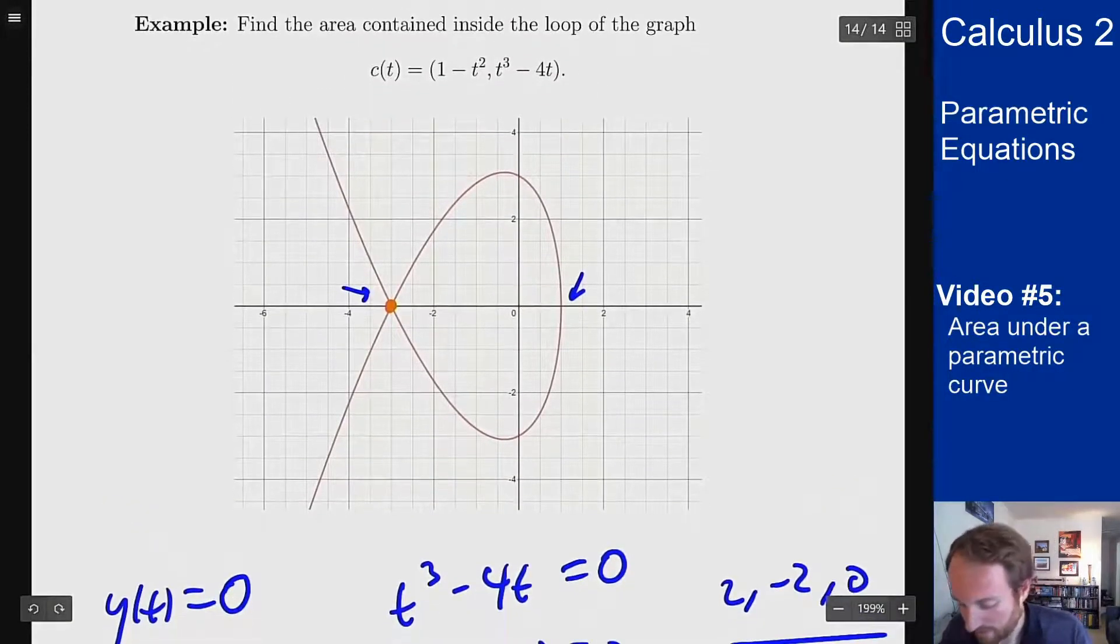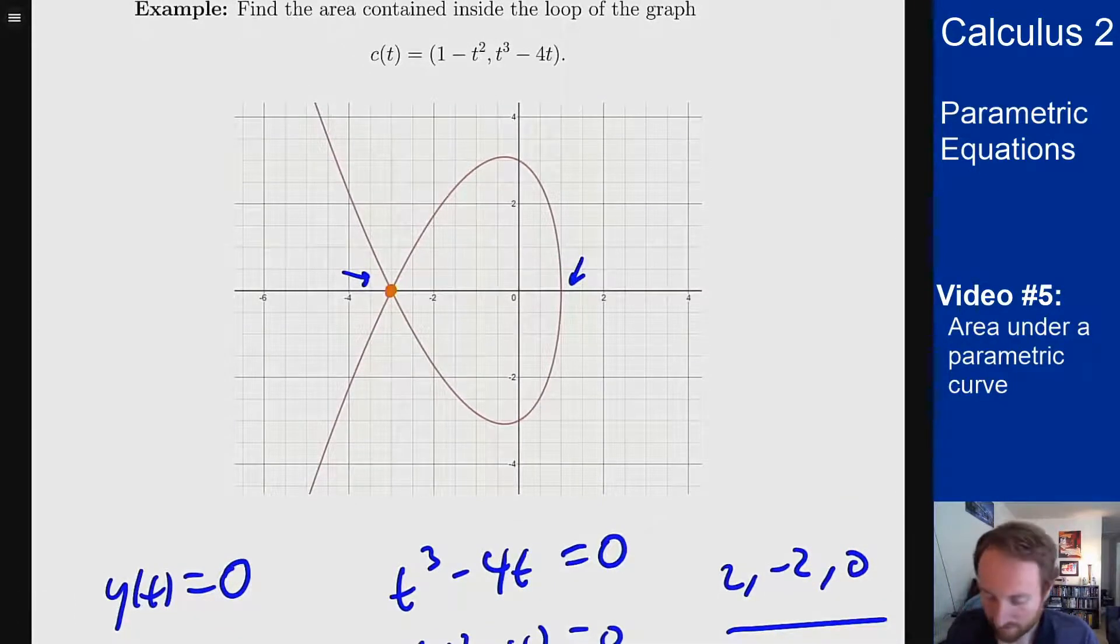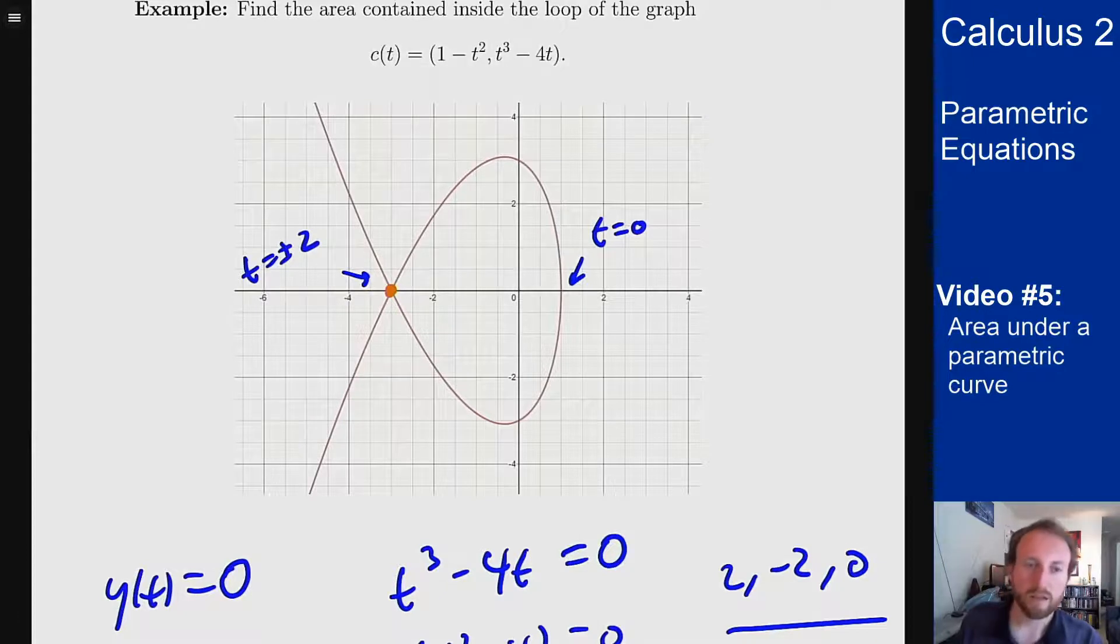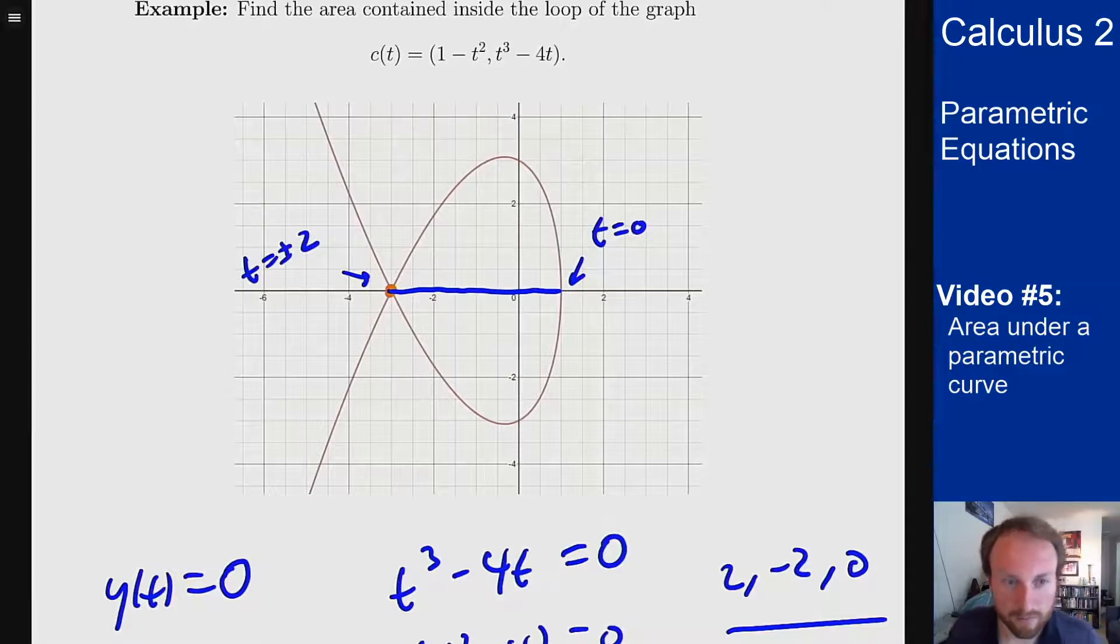Based on the fact that if I plug zero into c of t I get a 1 for the x coordinate, this here is the t equals zero one and over here I have the t equals plus or minus 2 at that point. So to find the area, I'm going to split this in half and just find the top area and then double it for the whole thing because this is a symmetric function. Right, this is even, this is odd. So to find that I'm going to integrate from zero to two. Because if I do zero I'll start over here and I do two I will hit this endpoint here, which will give me exactly one loop of this curve.